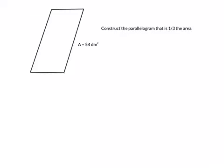For this example we're trying to construct a parallelogram that is one-third the area of this parallelogram, and as you can see this parallelogram is 54 decimetre square. So I'm going to first identify all the possible parallelograms that would have an area of 54 decimetre square, and to do that we're going to find factors.